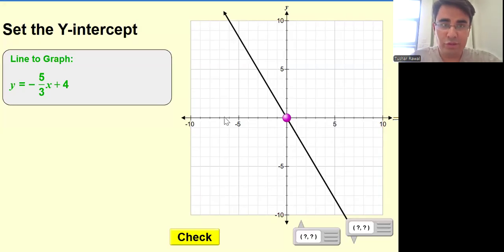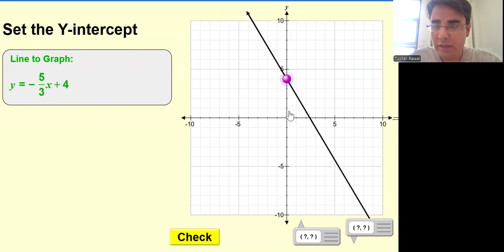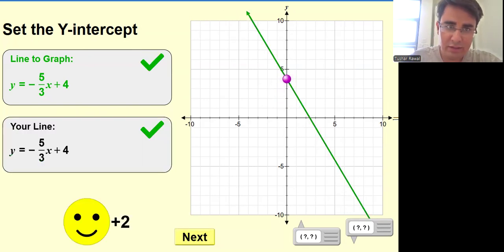So let us look at the level two type of questions. In the previous video, we discussed level one. We have given this equation, we need to set the graph in y-intercept. So y-intercept over here is positive four. So we'll go directly and here it is. That's the correct answer, positive four. Wonderful.